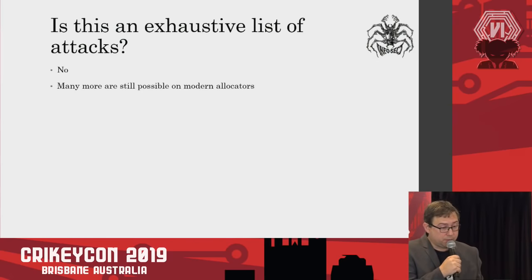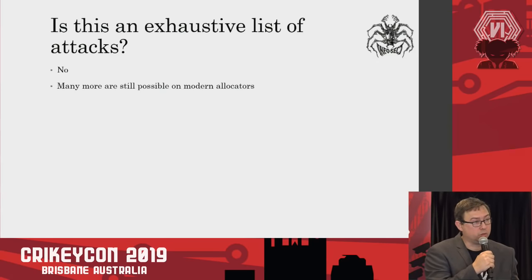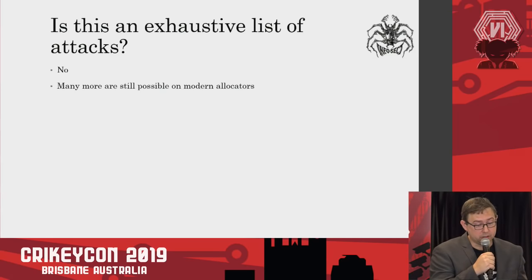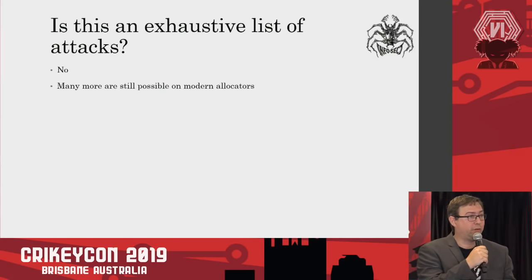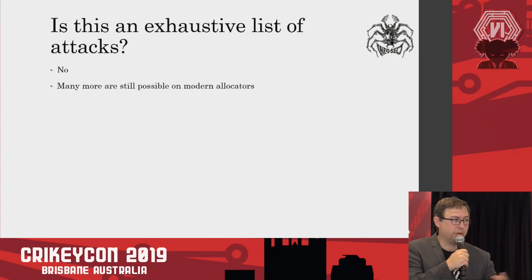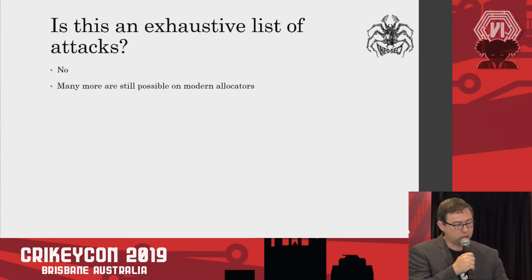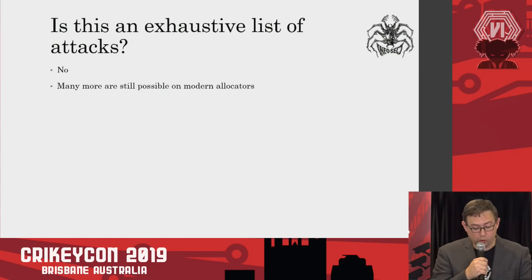This is not an exhaustive list of attacks — there are many more still possible in current allocators. For PT malloc specifically, it will probably just continue year after year: there will be mitigations, then more attacks against them, then more mitigations. So it's still a very important topic of research. Heap hardening has improved some things, but there's still a long way to go.